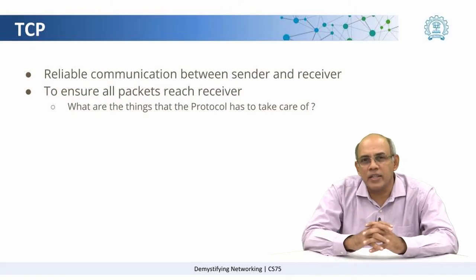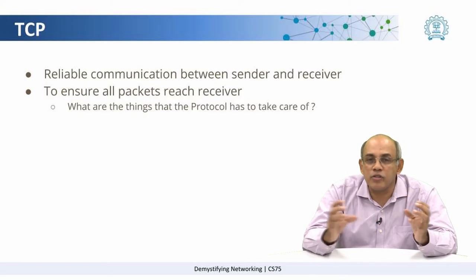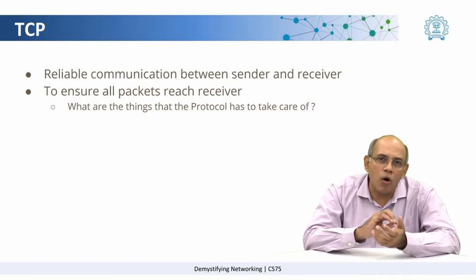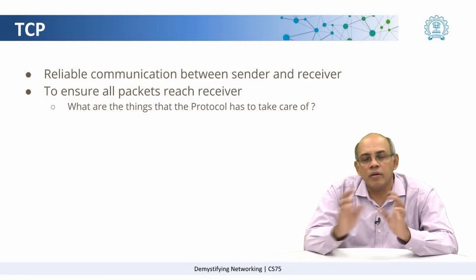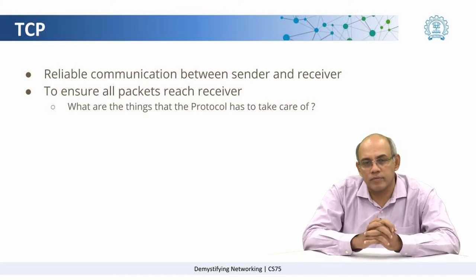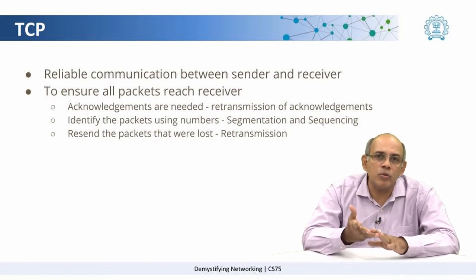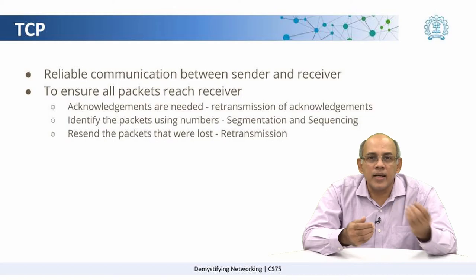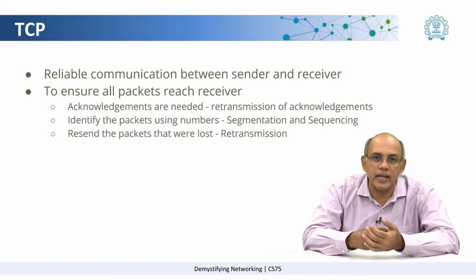Before we get into the details, let us try to understand this at a conceptual level. You have a sender, you have a receiver, and you have a bunch of packets. We want to ensure that all these packets reach the receiver from the sender. So what are the things that the network protocol needs to take care of? One of the things it has to do is to ensure that there are acknowledgements — that a packet has been received, and there have to be corresponding acknowledgements.